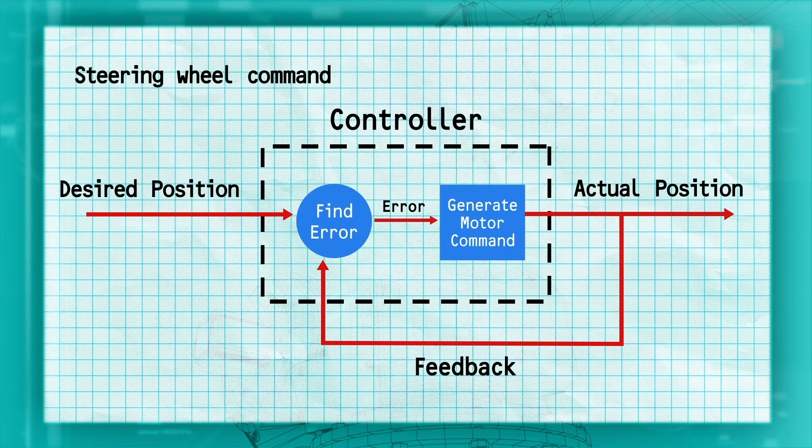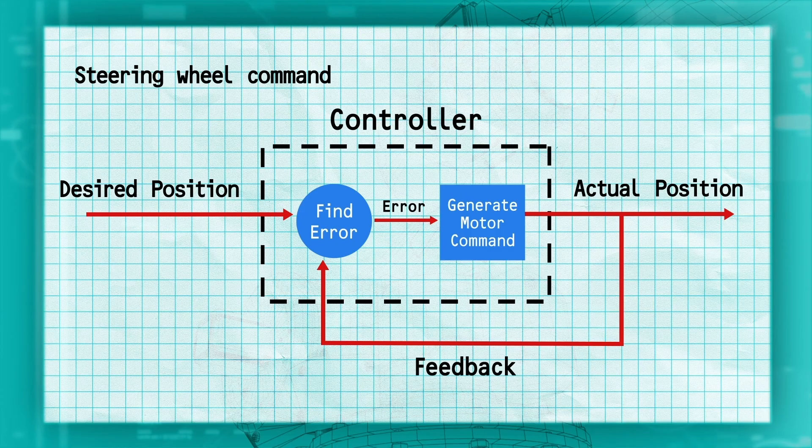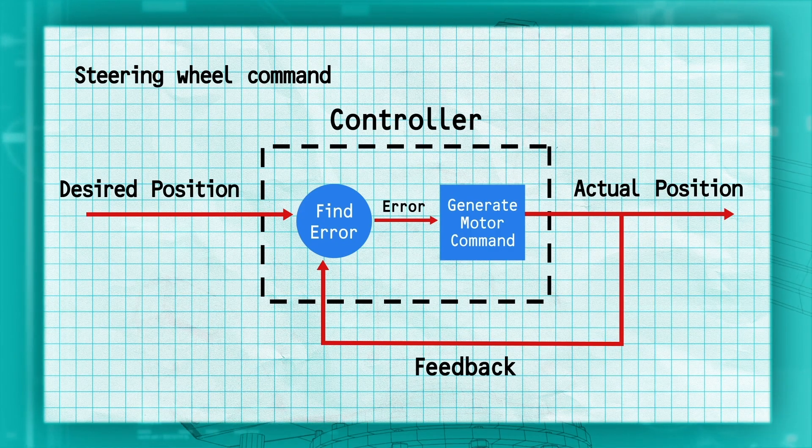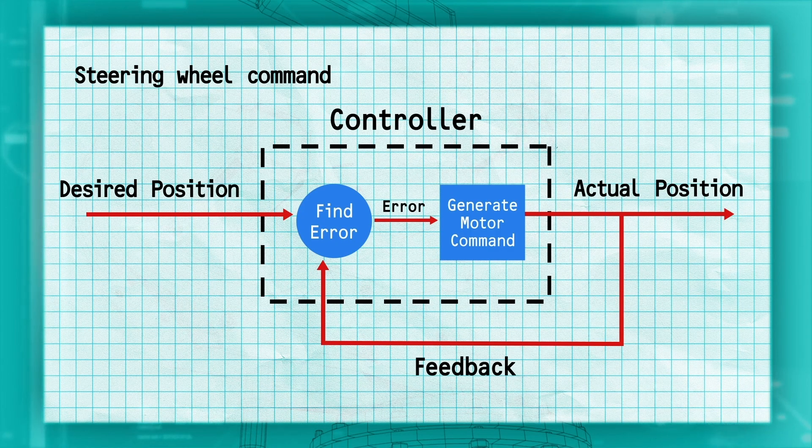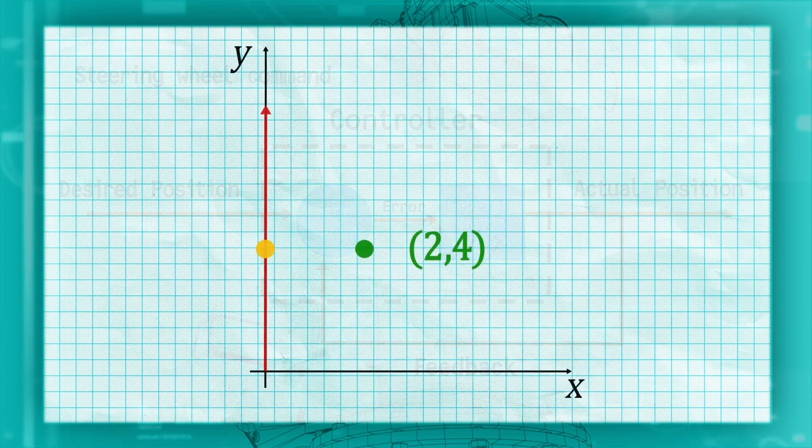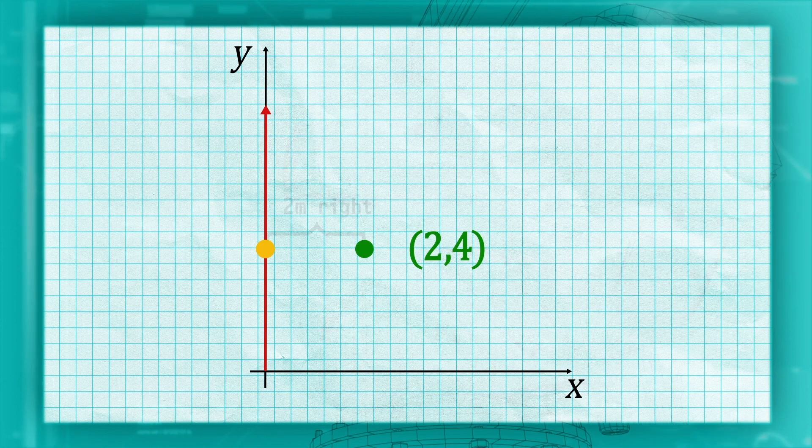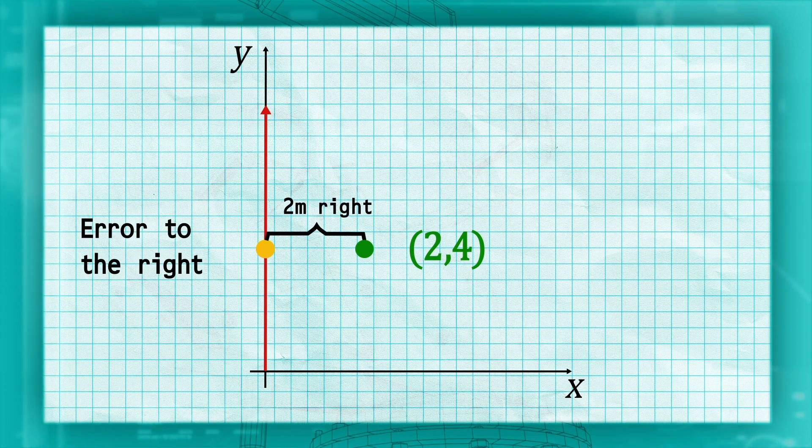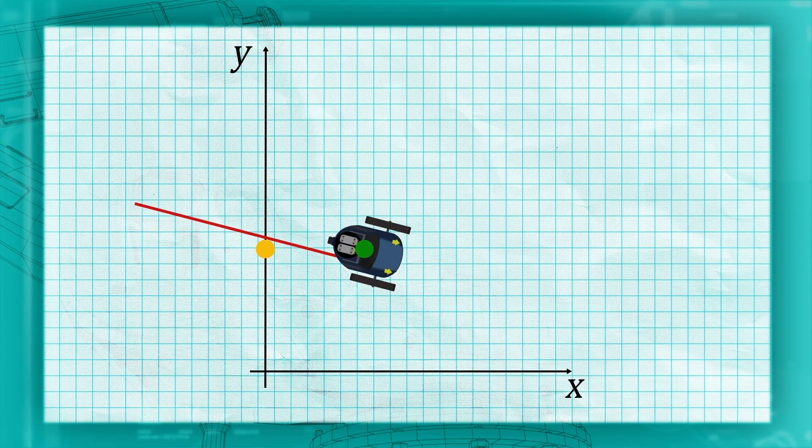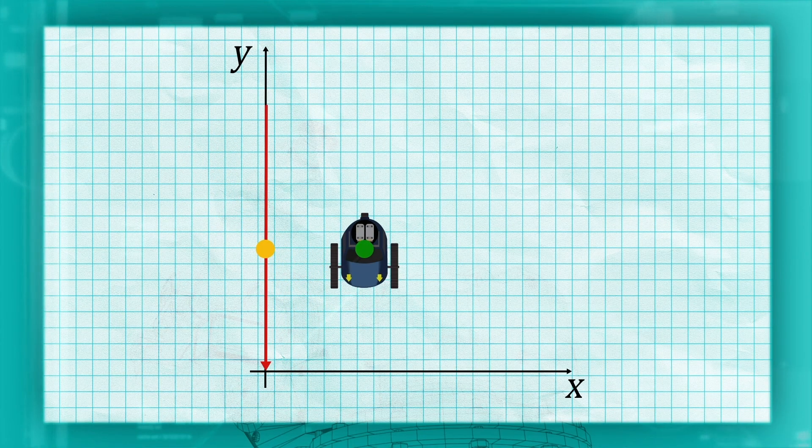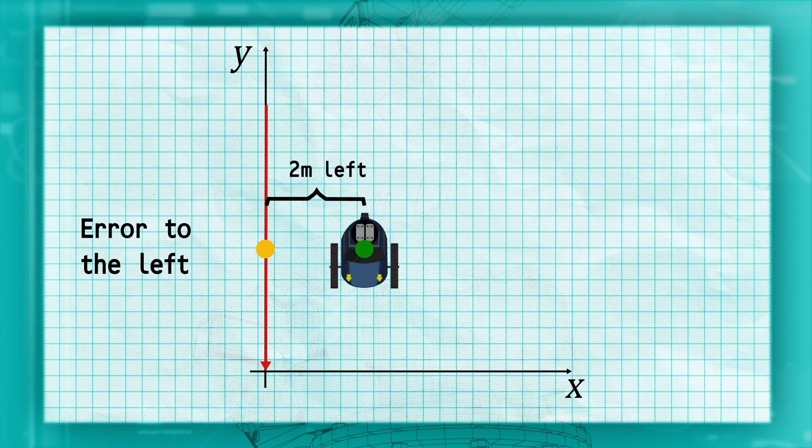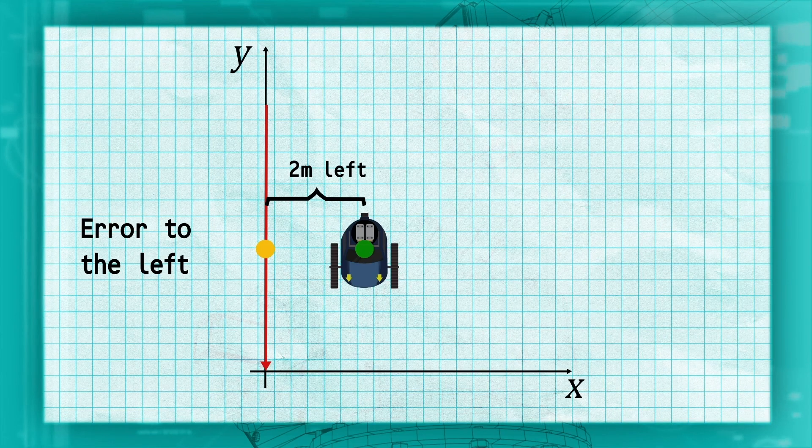When the controller combines the actual and desired positions, it is calculating the error. How far away the robot actually is from the path. In our case, finding the error is easy. We can just look at our x position. But that doesn't work if we are going in the negative y direction. In that case, we would be on the left of the desired trajectory. We need a more robust method of determining which side of the line we are on and how far away it is.